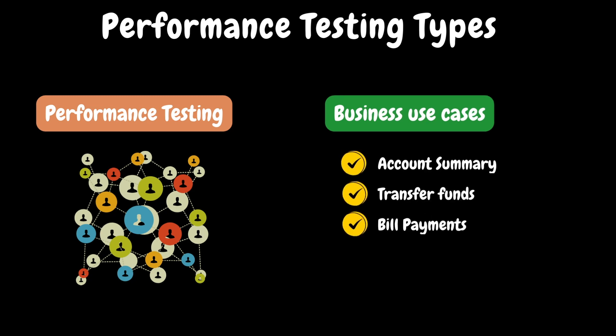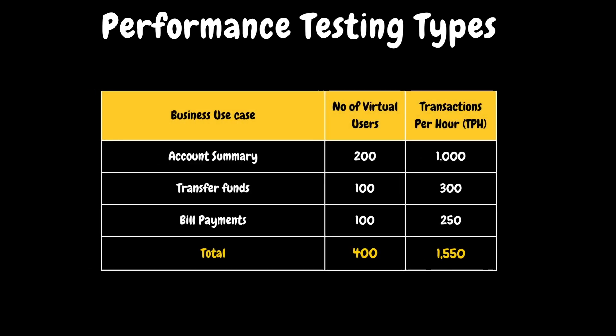For our discussion, let's assume that we need to test account summary, transfer funds and bill payments use cases as part of performance testing. During requirement gathering, we understand that during busy hours, 200 users are using account summary, 100 users are using transfer funds, and 100 users are using bill payments. That means in a given busy hour, there are 400 users active in the system doing different things. We need to test our application with 400 users, also referred to as the peak user load.